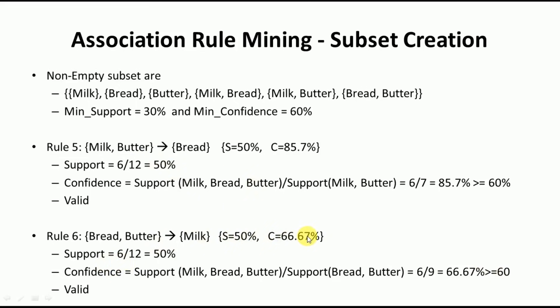This is how the Apriori algorithm is used to find valid, strong association rules. First, calculate the frequent itemsets, then identify strong rules based on the minimum support and minimum confidence values. If you liked the video, please like, share, subscribe, and click the bell icon for regular updates.